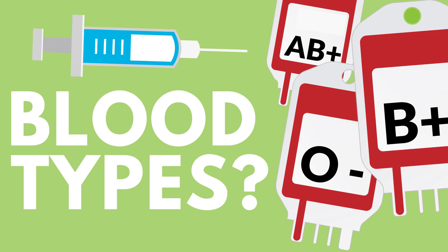Blood type and pregnancy. Our blood type plays a big role in pregnancy. Some people conceive far easier than others. For example, people with AB blood type produce less follicle stimulating hormone, which allows them to get pregnant easier.